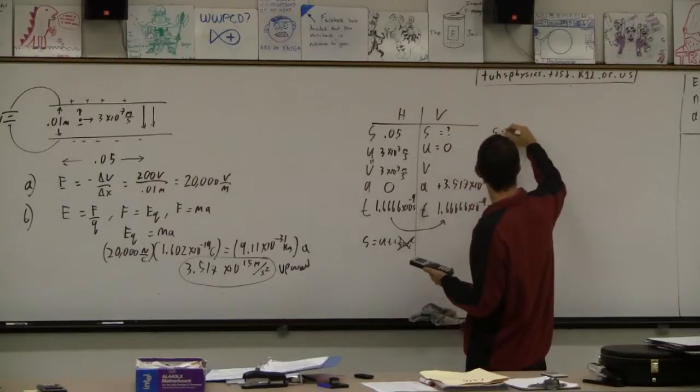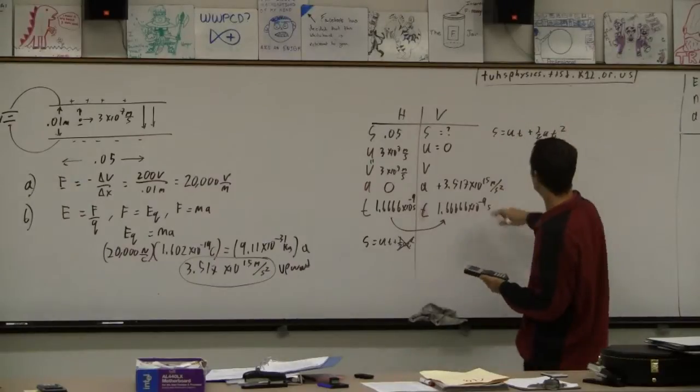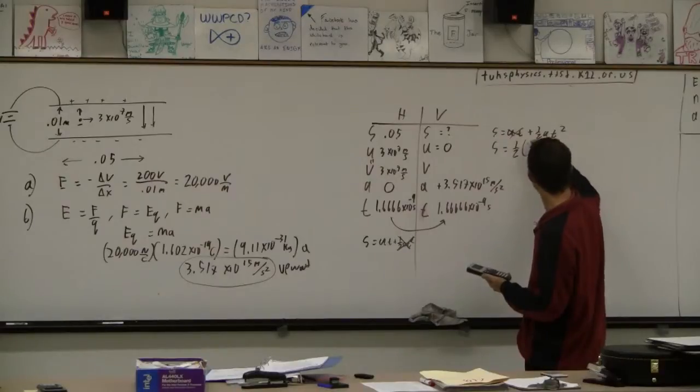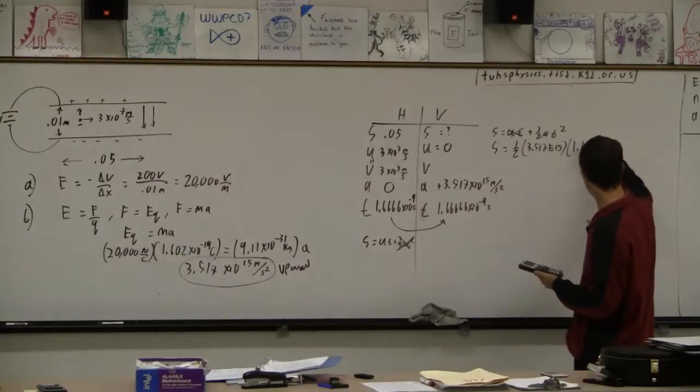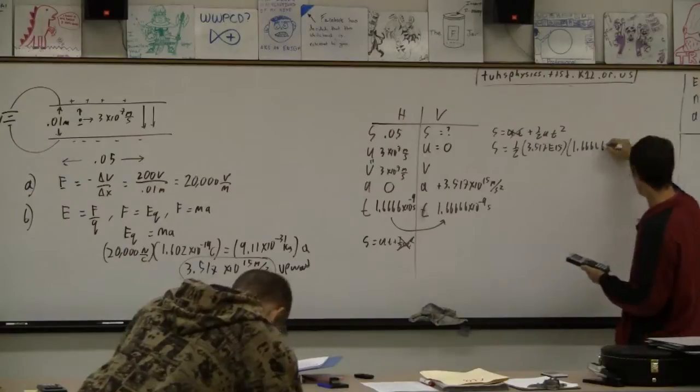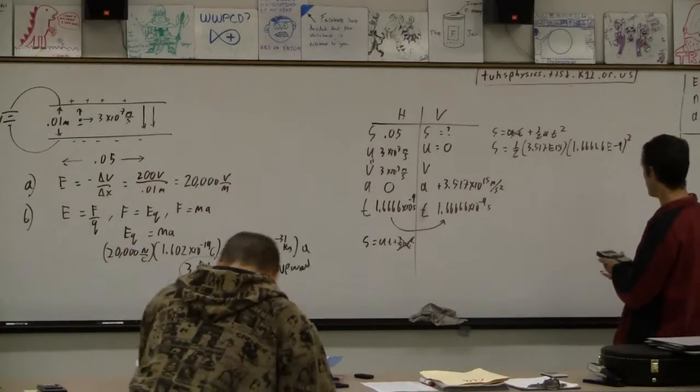All right, the initial velocity is zero so that term goes away. So S is one half A, which is 3.517 E15. And then T is 1.66666 E minus 9 squared. All right, so now I'm going to type that in, 0.5 times.